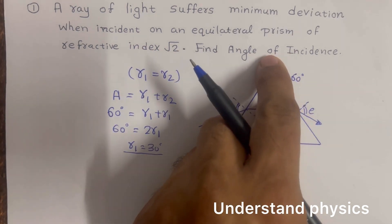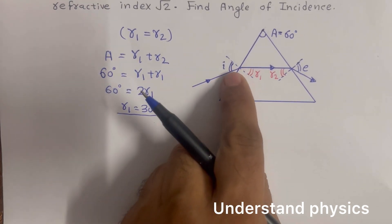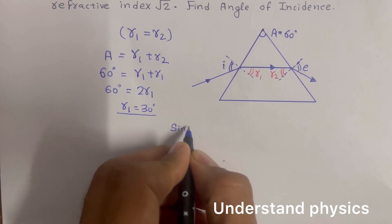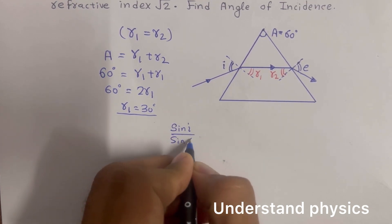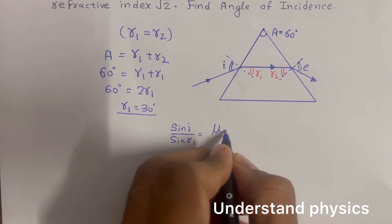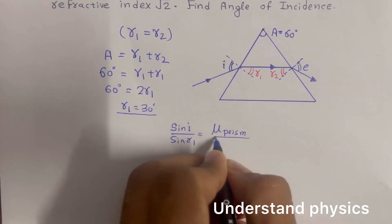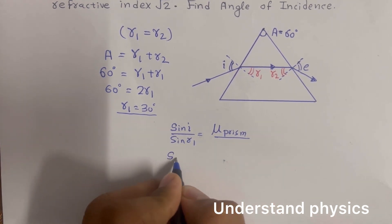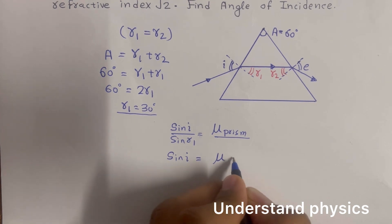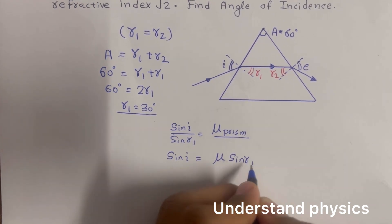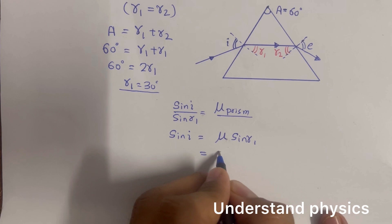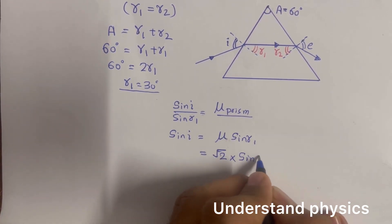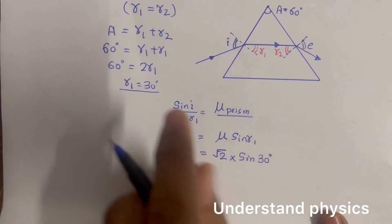Once we have r1 and the refractive index is given, we can find the angle of incidence using Snell's law. Applying Snell's law: sine of i divided by sine of r1 equals the refractive index of the prism. So sine of i equals refractive index times sine of r1. The refractive index given is root 2 and r1 is 30 degrees.